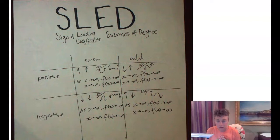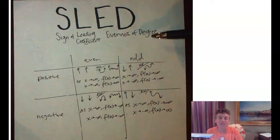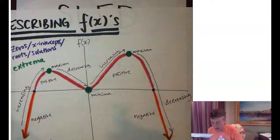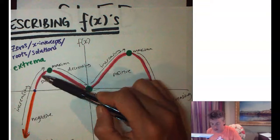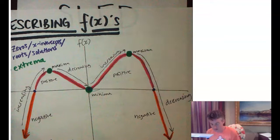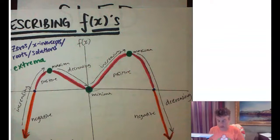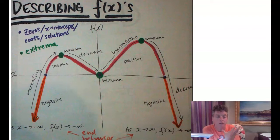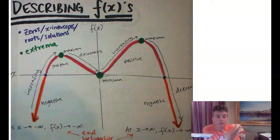These are all the ways we can describe functions: the sign of the leading coefficient, the evenness of degree, zeros, whether the function is positive or negative, whether it is increasing or decreasing, extrema — local maxima and local minima — as well as end behavior. Thanks for tuning in to this episode of Precalculus at Indianapolis Classical Schools. My name is Miss Akin, I love you guys so much, and I will see you next time — keep on that hustle!